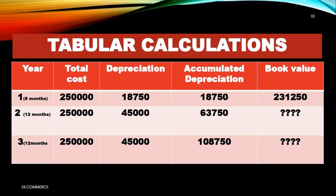Book value is total cost minus accumulated depreciation. Accumulated depreciation means the total amount of depreciation accumulated so far — in general English, it means to accumulate or collect. It represents how much your fixed asset has reduced or worn down in value up to the current period. Then you find the book value accordingly.